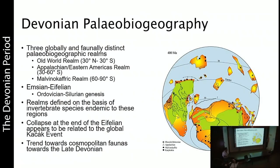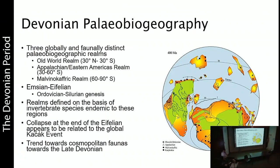It was the last real time where we saw distinct biogeographic ranges, where certain communities of animals existed in discrete populations in discrete areas on Earth. By and large there were three biogeographic realms: the Old World realm hovering around equatorial latitudes, the Appalachian or Eastern American realm in more temperate regions, and the Malvino-Kaffric realm — the critters here were Malvino-Kaffric in nature. The collapse of these large biogeographic realms took place at the end of the Eifelian. No one really knows why this change happened and why it went over to more cosmopolitan fauna.